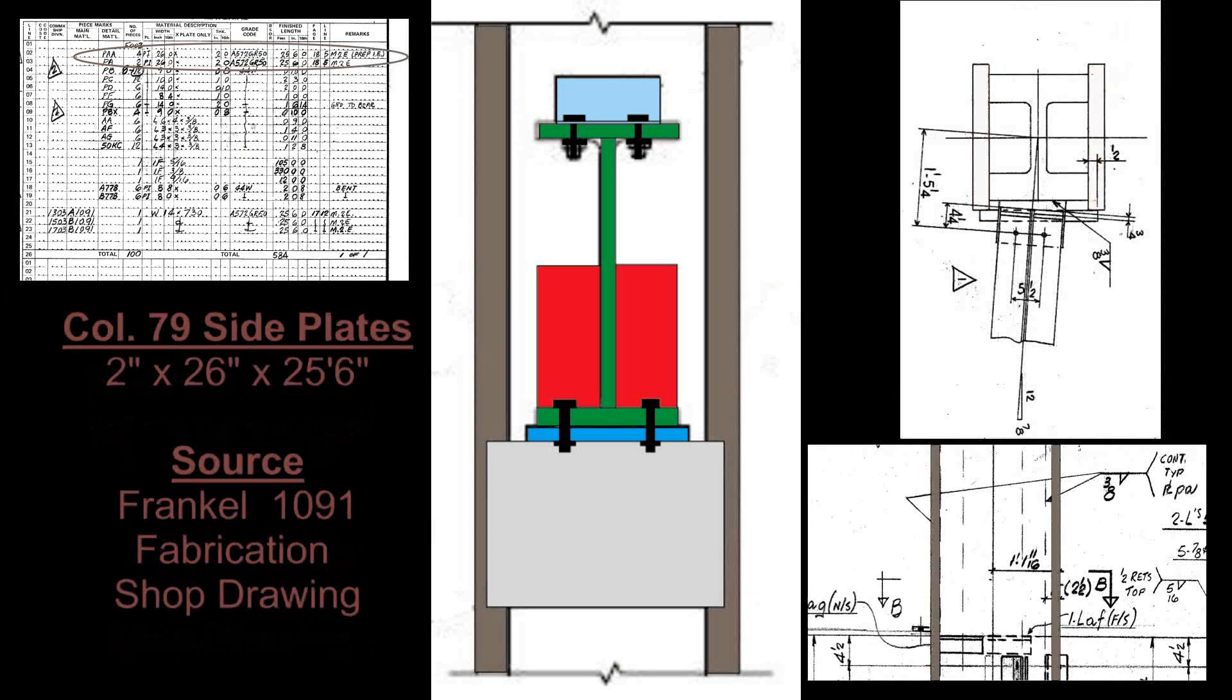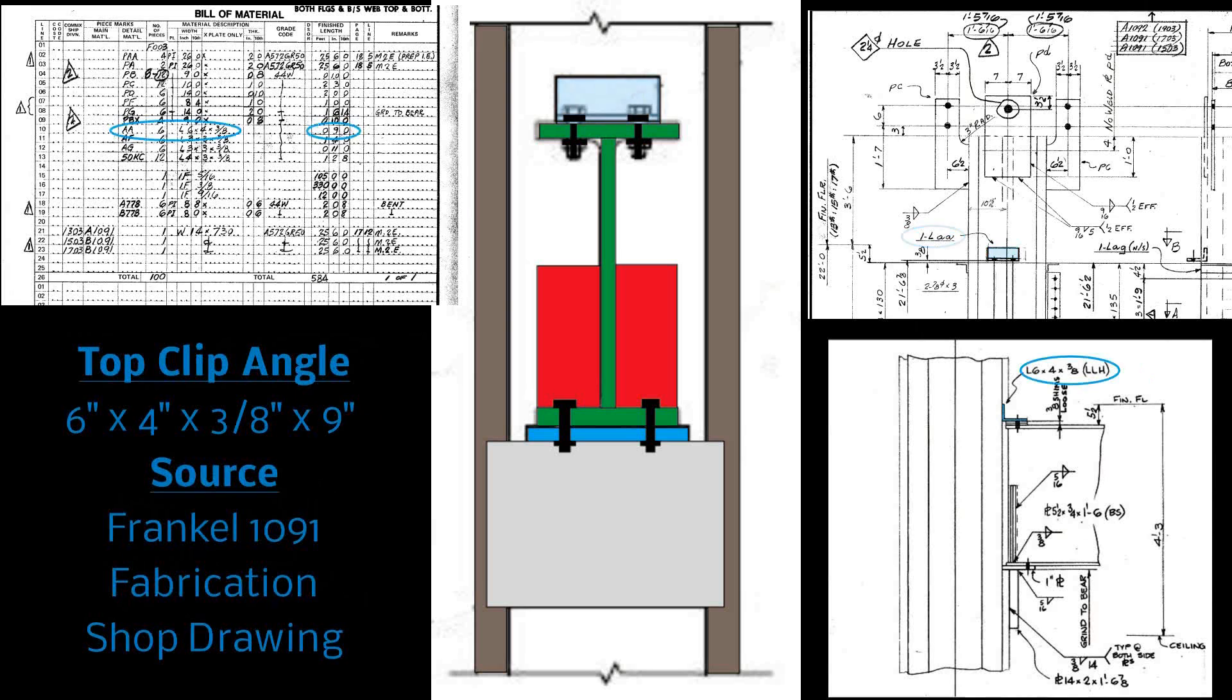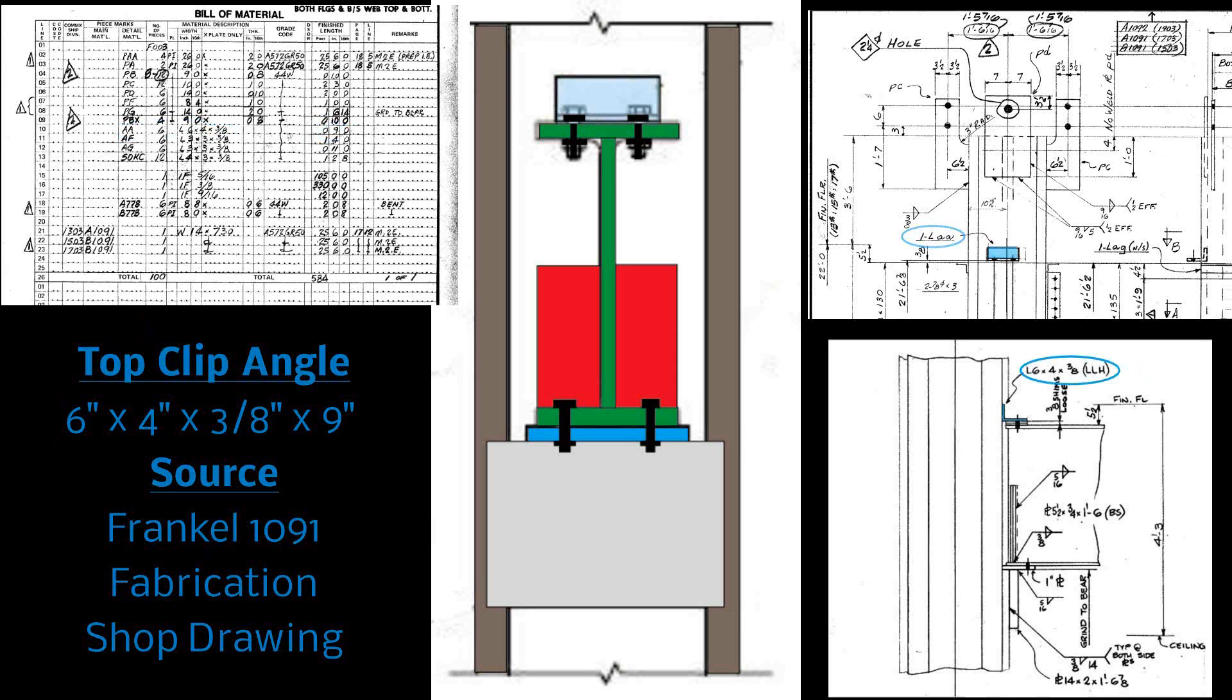On the sides of column 79 there are side plates. They are 2 inches by 26 inches and are attached by means of welding in lengths of 25 foot 6 inches. You can see them in Frankel 1091 fabrication shop drawing. At the top of the girder we have a top clip angle. It is 6 by 4 by 3/8ths by 9 inches. You can see it in Frankel 1091 fabrication shop drawing.